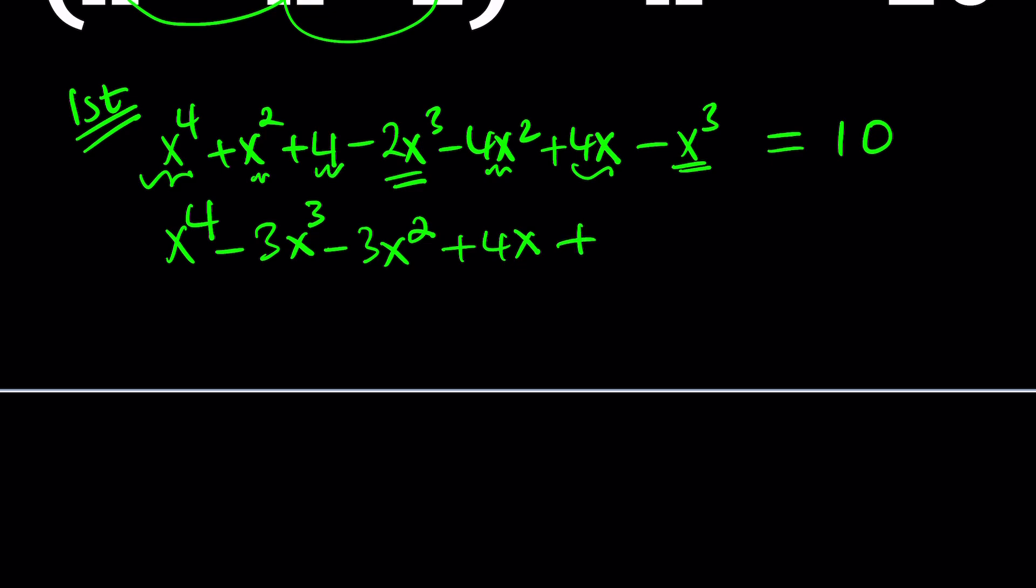So we've taken care of everything, but we still have a number on the right-hand side. So bring it over, and then you'll have your complete quartic equation. And 4 minus 10 is negative 6, so we'll put a minus sign there. Now you have your quartic. What should you do?